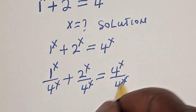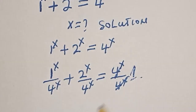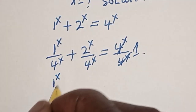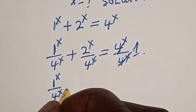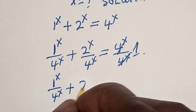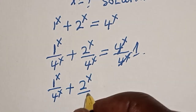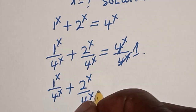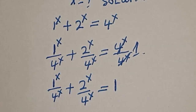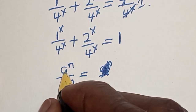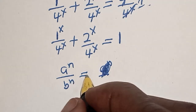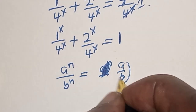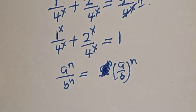The right side cancels to 1, so we have 1 raised to power s divided by 4 raised to power s, plus 2 raised to power s divided by 4 raised to power s, is equal to 1. Remember: if you have a raised to the power n divided by b raised to the power n, this is equal to (a over b) raised to the power n.